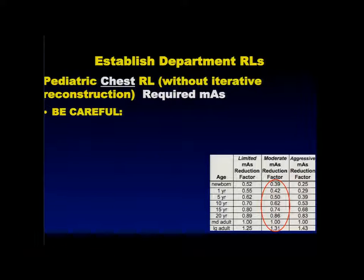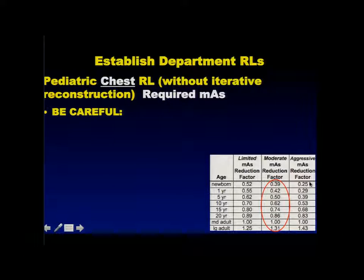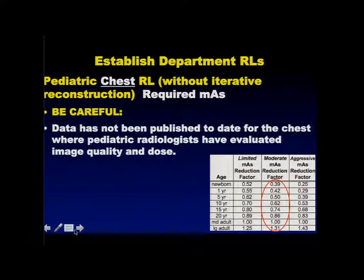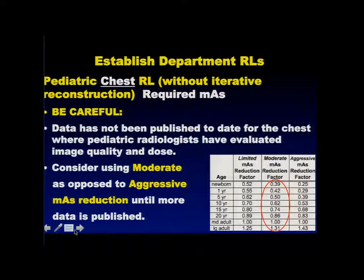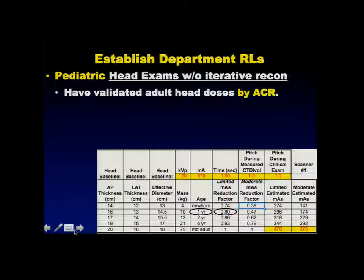When you do chests, be a little careful. The data for chests hasn't been published yet by Quirk, but the results are not that much different from abdominal data. So if you can use the aggressive model for abdomens, you can use the aggressive model for chests as well. But if you're uncertain, start with the moderate level. The aggressive model should be fine for chests also.